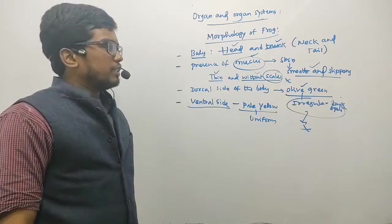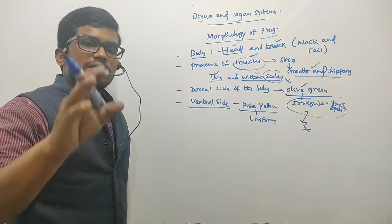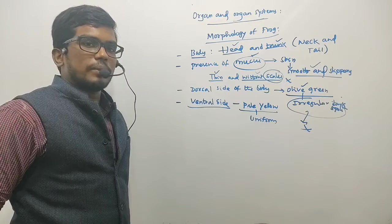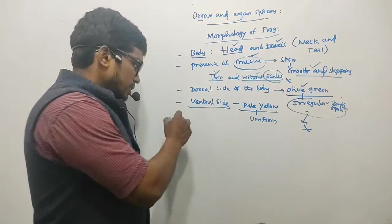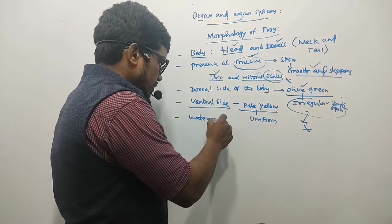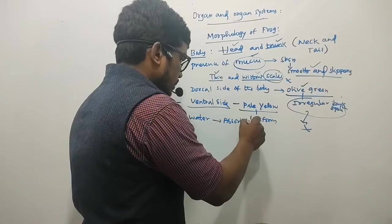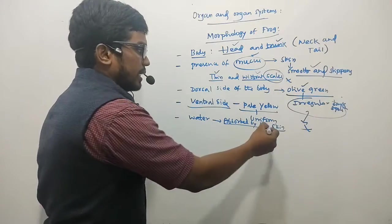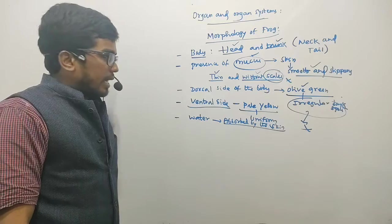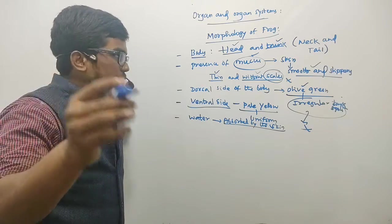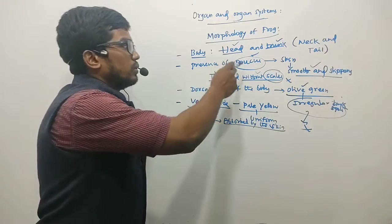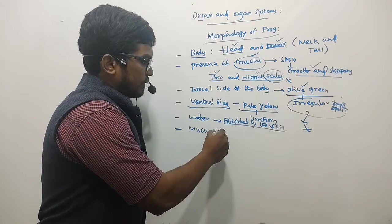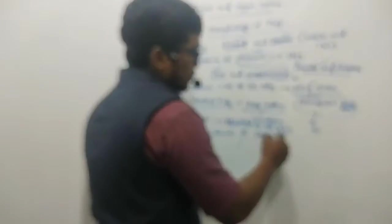Frogs never drink water — they absorb it through the skin. The water is absorbed by the skin and they do not drink. In the skin, mucus glands are present which produce mucus, and poisonous glands are also present.